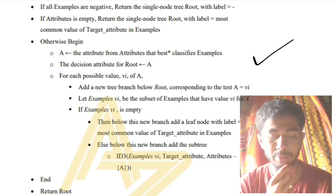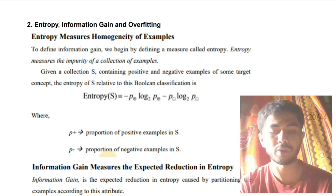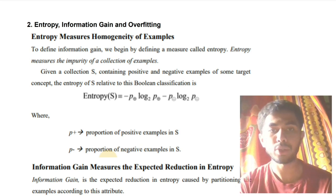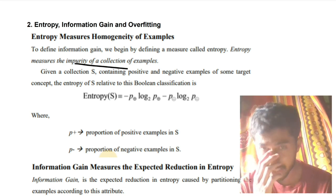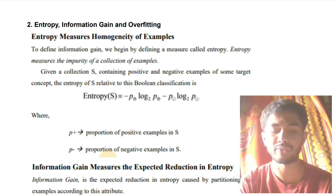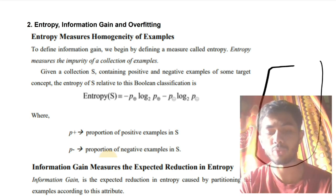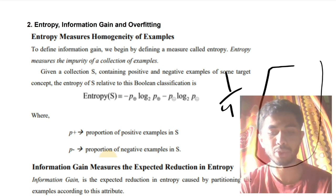The numerical can also be asked from here, which I'll discuss in a separate upcoming video. Now let's move to the second question: entropy, information gain, and overfitting — super important. Entropy means you are seeing what is the impurity of a collection of samples. For example, if you have 10 items in a fridge — nine chocolates and one dead rat — the impurity is one out of nine. That's how impure the sample is.